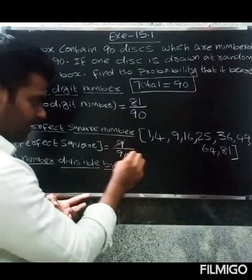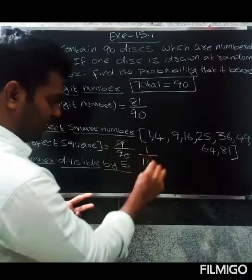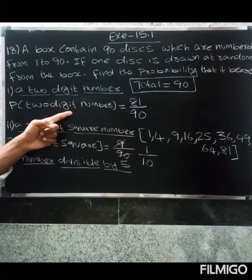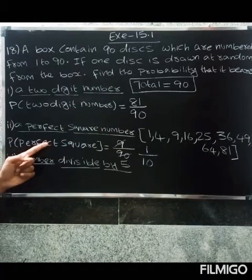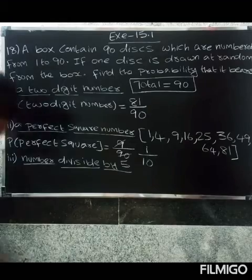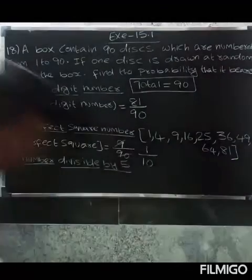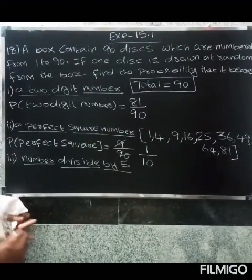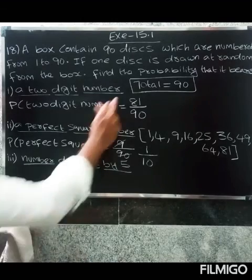Okay, so two-digit number 81 by 90. So you don't answer... one divided by 10. Next, probability of number divisible by five. So one to 90 number. Okay, so you know number divisible by five.